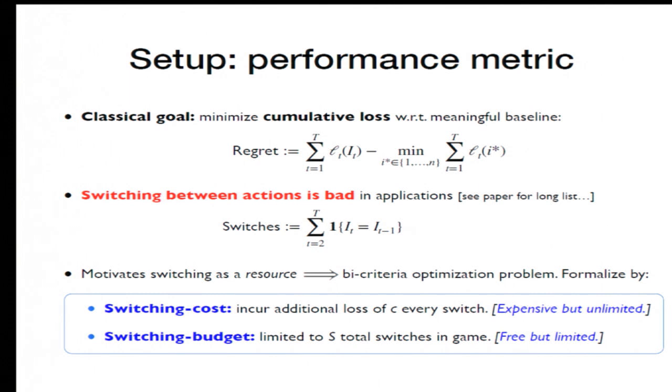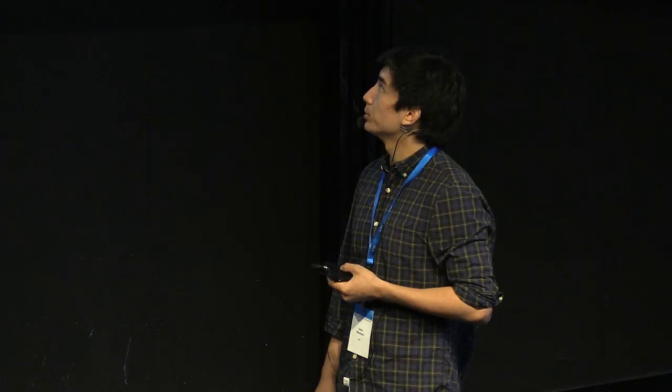The second is the switching budget setting where you, again, try to minimize regret, but your algorithm is limited to a hard cap of a certain number of switches. So, maybe only 100 switches the whole game or square root of T switches the whole game. Said simply, the switching cost setting corresponds to expensive but unlimited switches, whereas the switching budget setting corresponds to free but limited switches.